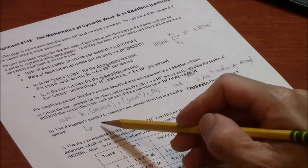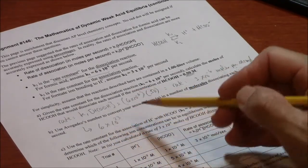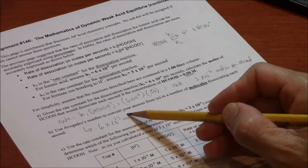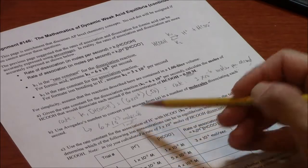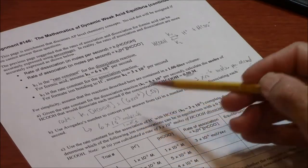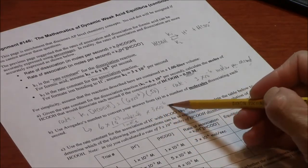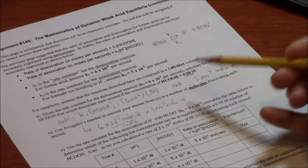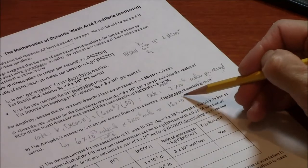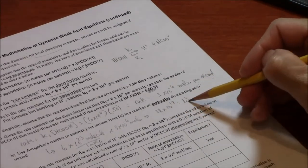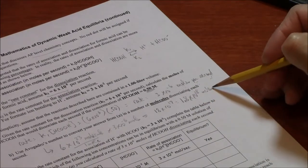Avogadro's number, you should remember, is the 600 million million billion, which is 6 times 10 to the 23rd molecules per mole. So that's going to be 18 times 10 to the 17th power, which is 1.8 times 10 to the 18th molecules per second.